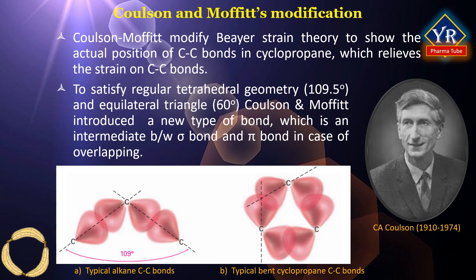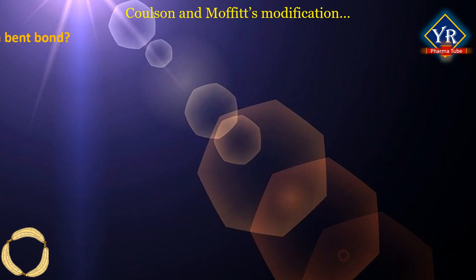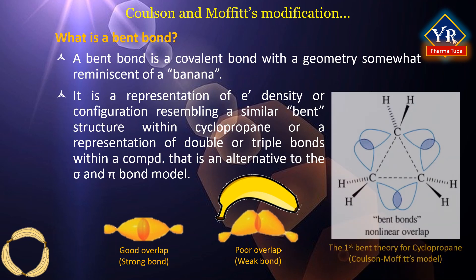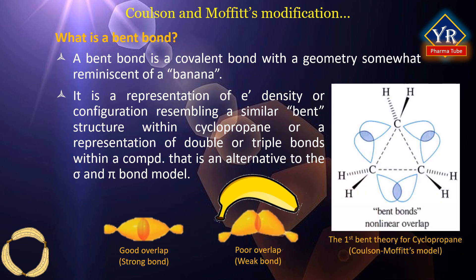See the figures given. In figure A, you can see the actual or maximum overlapping of sigma bonds permitted for open chain or large ring compounds. And in figure B, you can see a bent bond because of poor overlap for the cyclopropane ring. Bent bonds have much more P character. A bent bond is a type of covalent bond with a geometry somewhat reminiscent of a banana. The term itself is a general representation of electron density or configuration resembling a bent structure within small ring molecules such as cyclopropane, or a representation of double or triple bonds within a compound — an alternative to the sigma and pi bond model.